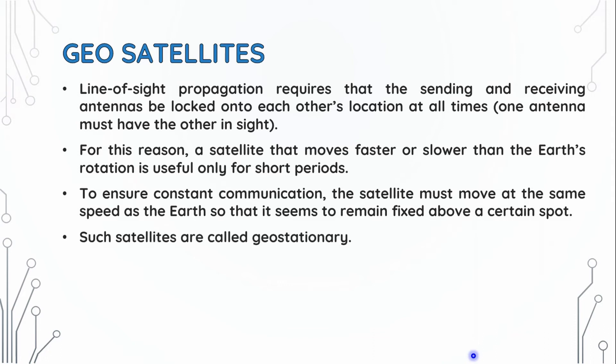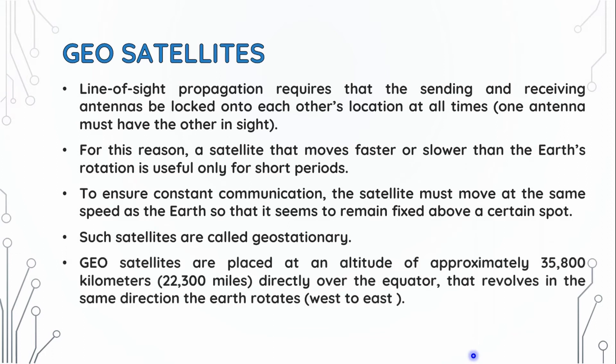Such satellites are called geostationary satellites. Geosatellites are placed at an altitude of approximately 35,800 km directly over the equator. They revolve in the same direction the Earth rotates, west to east.